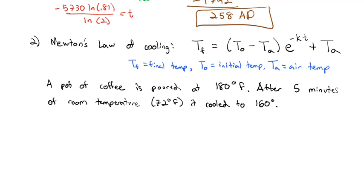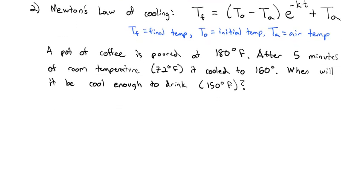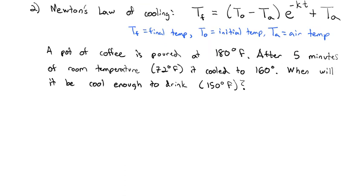If I have a pot of coffee poured at 180 degrees Fahrenheit, after five minutes at room temperature of 72 degrees, it cooled to 160 degrees. When will it be cool enough to drink? Let's say that means 150 degrees. The big piece of information we're missing is what is the constant k for this coffee?